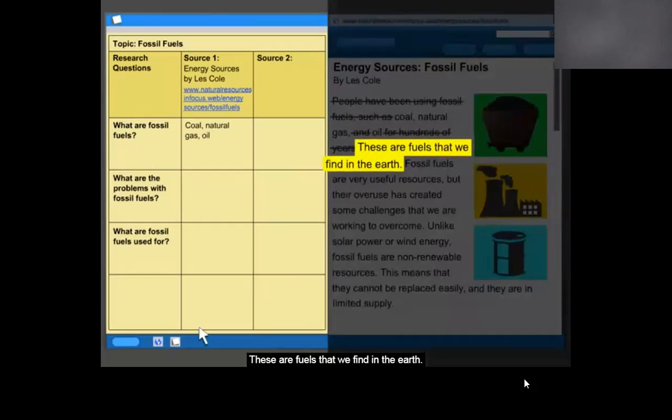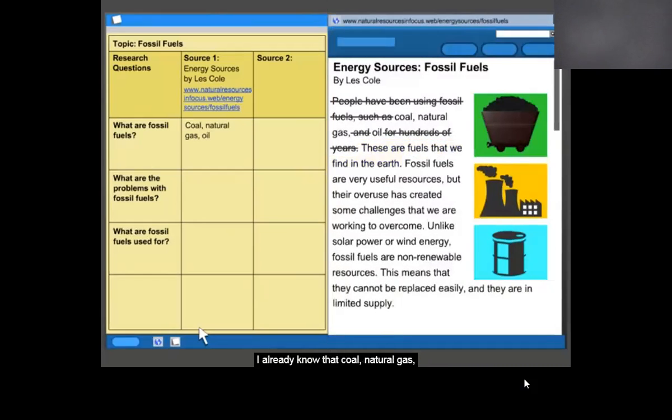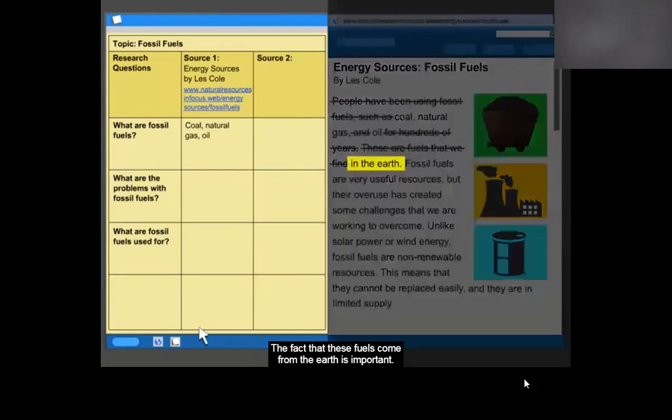These are fuels that we find in the Earth. I already know that coal, natural gas, and oil are all fuels, so I don't need to put that information in my chart. The words, that we find, I don't need either. The fact that these fuels come from the Earth is important.